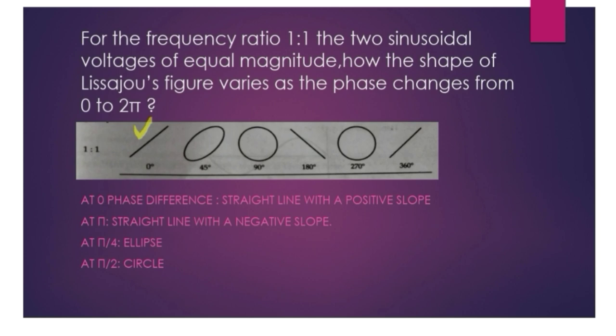Then at 45 degrees, we get an ellipse. And at 90 degrees, we get a circle. At 180 degrees, we get a straight line but with a negative slope.